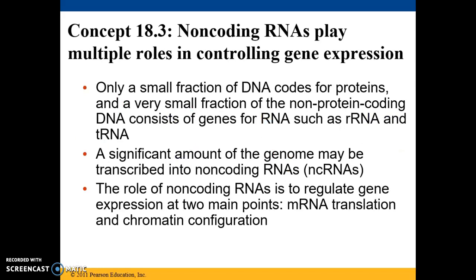Only a small fraction of our DNA actually codes for proteins. Some of this non-protein coding DNA does end up coding for rRNA and tRNA, which help with translation, but a lot of this non-coding portion of the genome is transcribed into what we call non-coding RNAs, or ncRNAs. The role of non-coding RNAs is actually to regulate gene expression, and this occurs at two main points: mRNA translation and chromatin configuration.